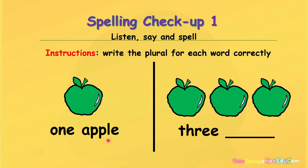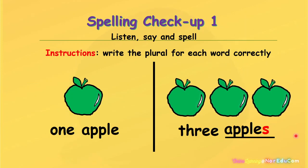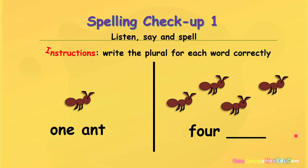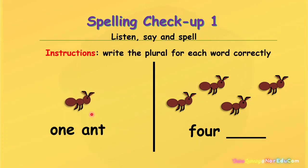One apple. What about this one? Three apples. Well done, everybody. This is an ant. One ant, four ants.